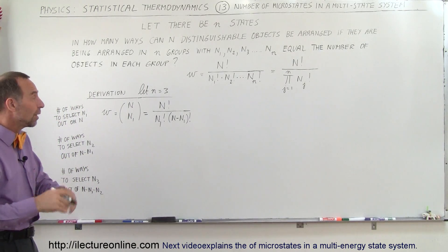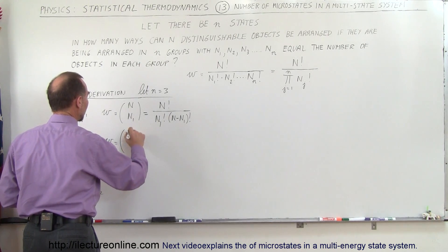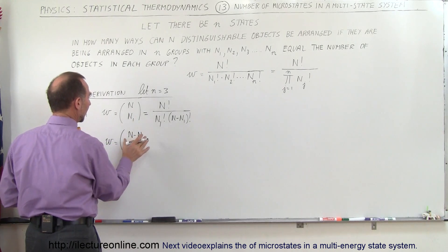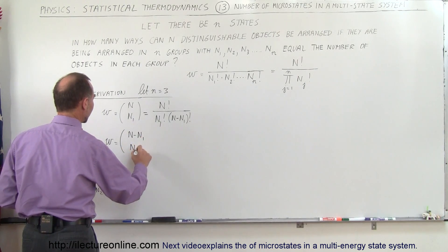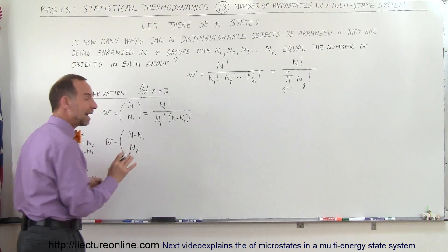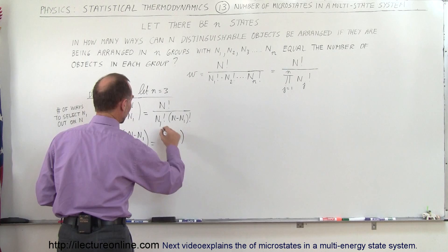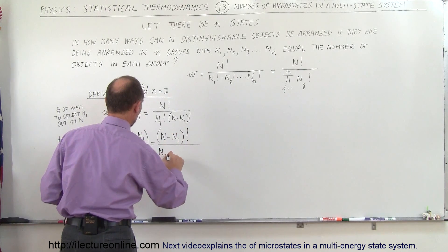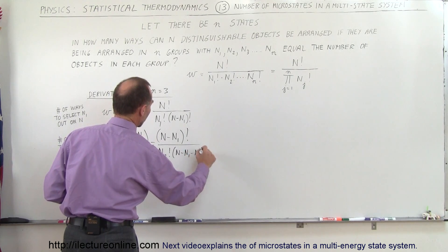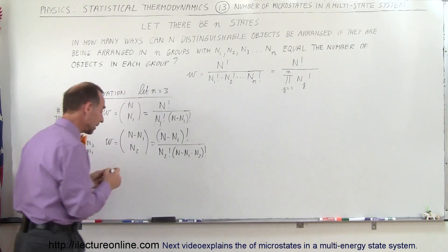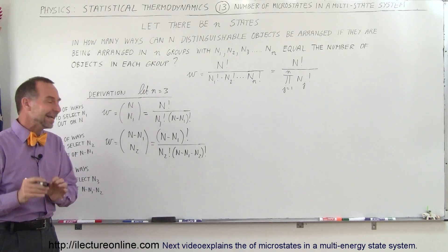But we don't have just two states — we have three states, so we have to continue the process. The number of microstates for selecting n sub 2 objects from the remaining objects is equal to (n minus n sub 1) factorial, divided by n sub 2 factorial times (n minus n sub 1 minus n sub 2) factorial. That gives us the number of ways to assign objects to state 2.